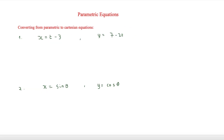One of the most common tasks with parametric equations is converting from a parametric to a Cartesian equation. Our first example is x equals t minus 3 and y equals 7 minus 2t. To do this, we find what t is and substitute it into the other equation, so we have no t's — only x's and y's. We make t the subject of x equals t minus 3, giving t equals x plus 3.